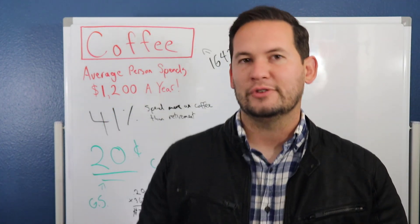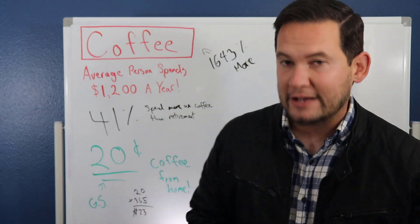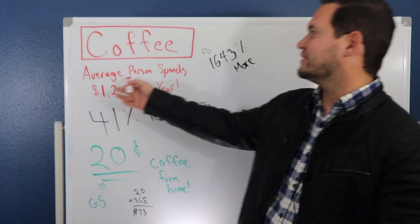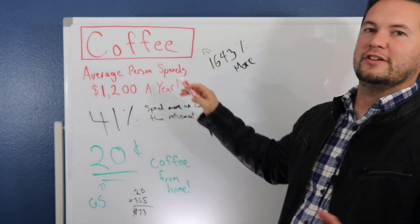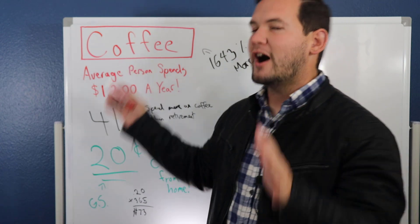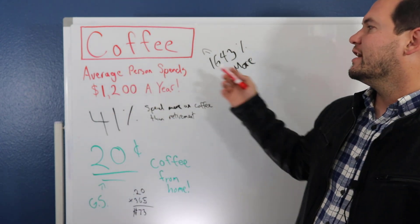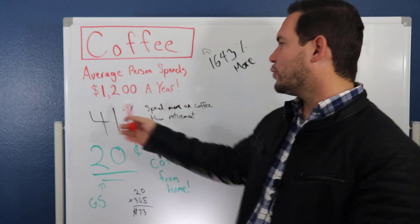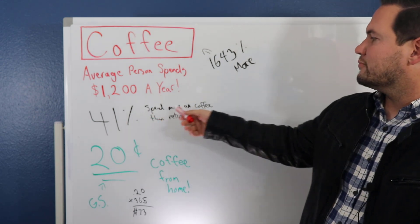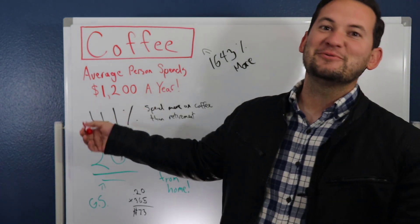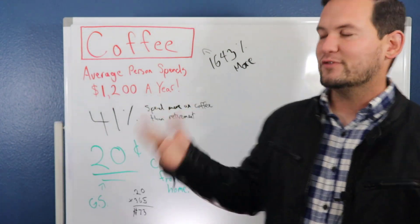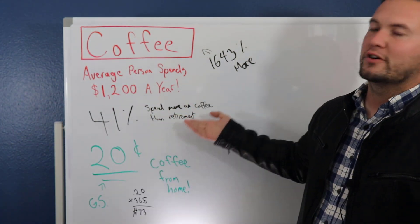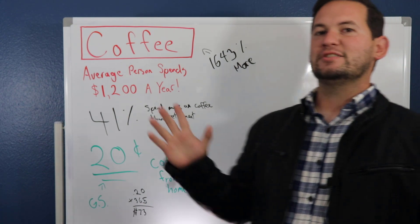If you're going to a coffee shop every day and buying an $8 coffee, that is absolutely insane. Please do not do that. The average person spends $1,200 a year on coffee - just coffee, these aren't meals, these are just coffee. And 41% spend more money on coffee than they do retirement. They're spending more money just to get a little bit of fix of caffeine every day than planning for their future. Please do not do this.